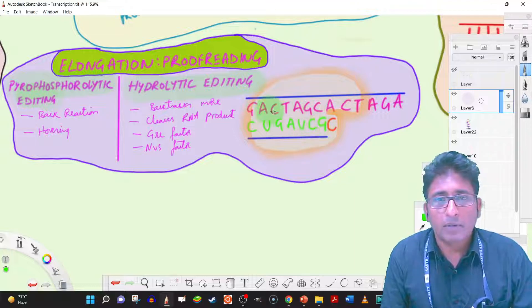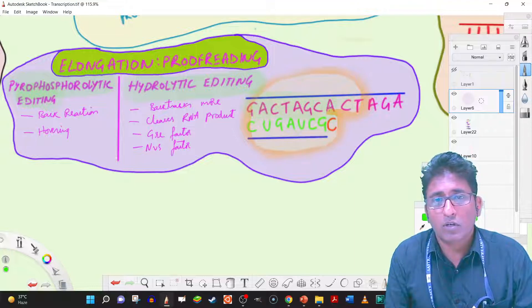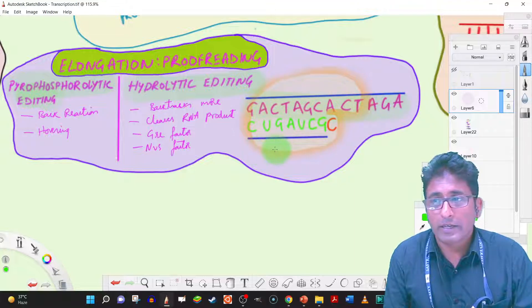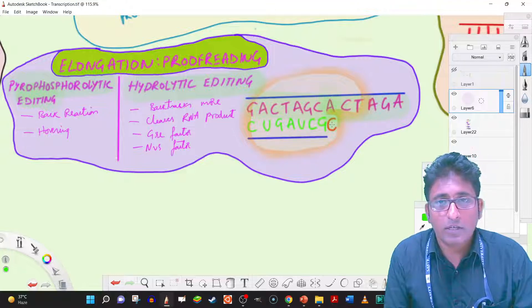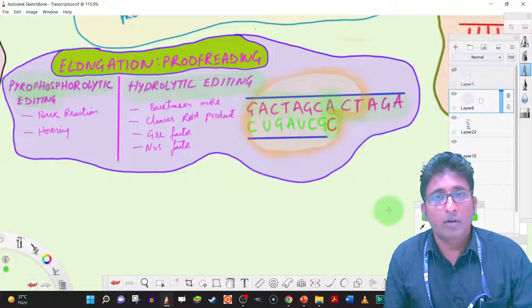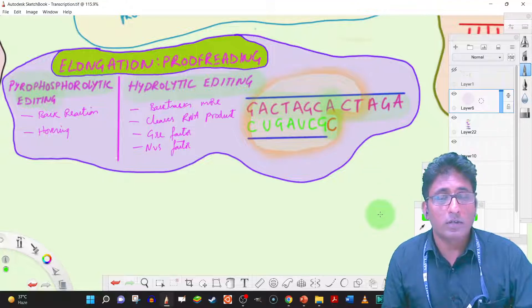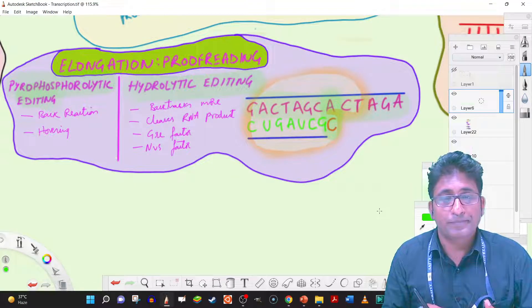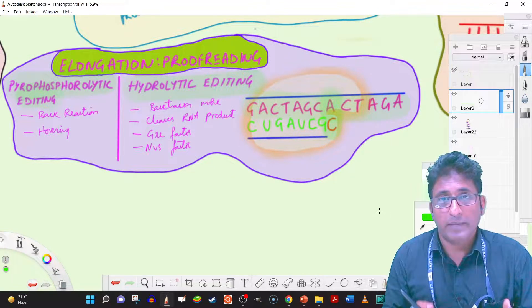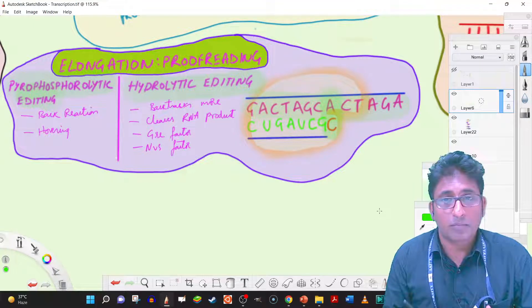Here we have an example of a template on the top and then a growing chain of RNA that is there. And in this location, we have a wrong base added. Cytosine has added against adenine, and that is a mismatch. And that is a wrongly incorporated base.